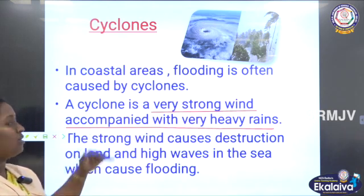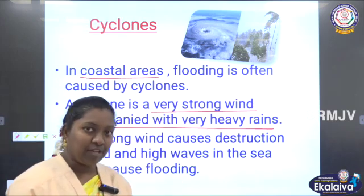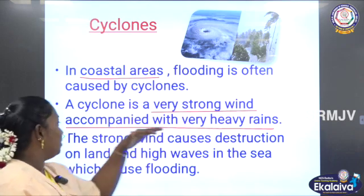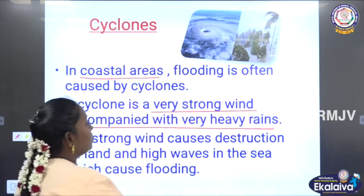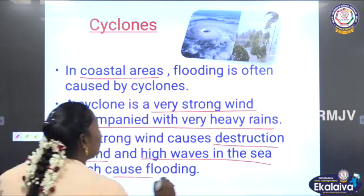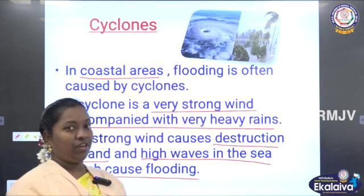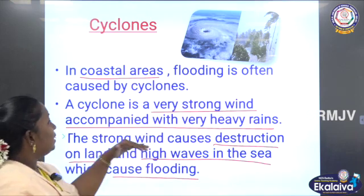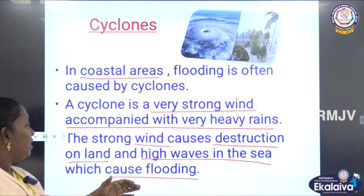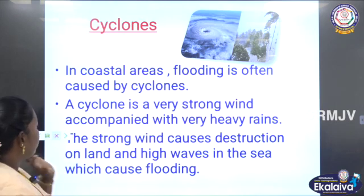Cyclones occur mostly near the coastal areas. Flooding is often caused by cyclones. The flood caused by cyclones affects people living near the coastal areas. The strong wind causes destruction on land and highways, while in the sea it causes flooding. That wind causes changes on the land, and the waves from the sea bring very heavy flooding. By this way cyclone also affects the people living on the earth.